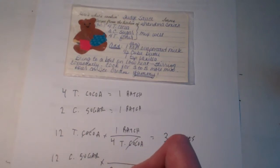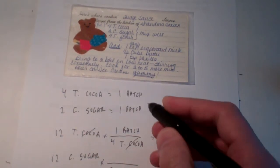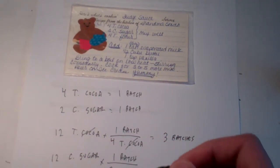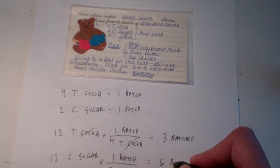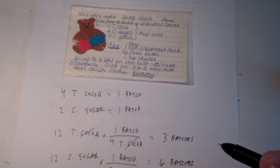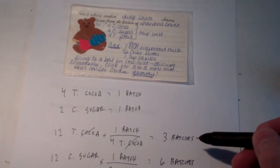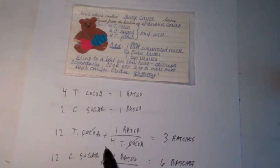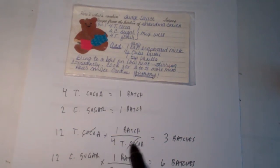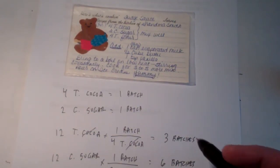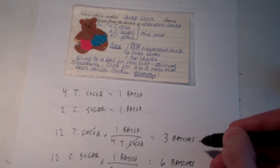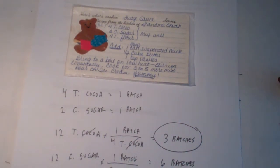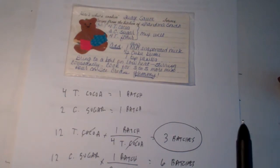How many batches could I make with my 12 cups of sugar? For every two cups of sugar, according to the recipe, I can make one batch of fudge sauce — so this will allow me to make six batches. So how many can I really make — three or six? It looks like the cocoa is my limiting reagent here. It's going to limit me in the number of batches I can make. Sure, I can make six batches with my sugar, but my cocoa only allows me to make three. So I can only make three batches. The cocoa in this example was my limiting reagent.